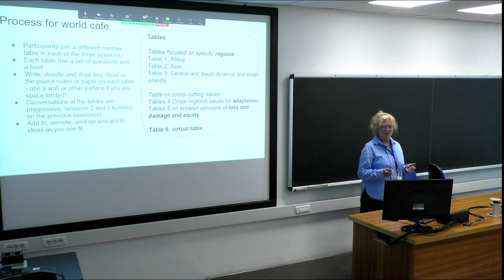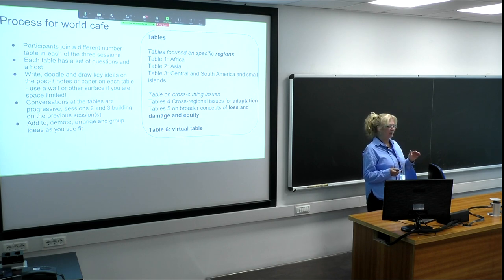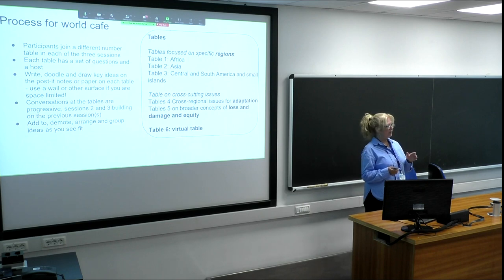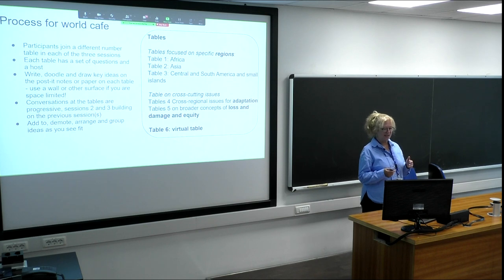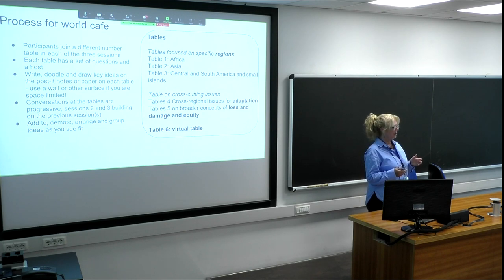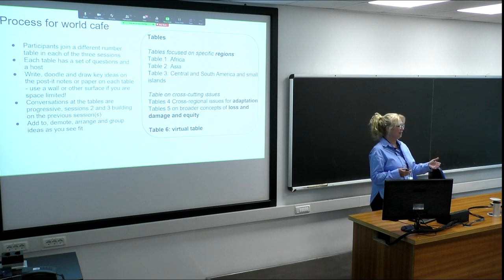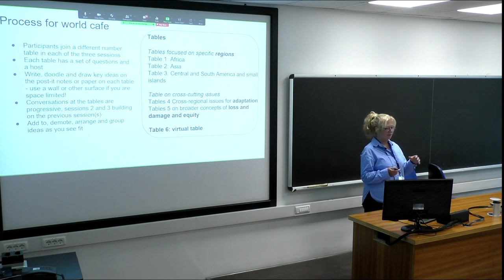We have five tables: three focused on specific regions — Africa, Asia, and Central and South America and Small Islands — and then two cross-cutting tables, one on adaptation and one around broader concepts including loss and damage. Each table will have a set of questions and we want you to visit three tables throughout the afternoon — you can visit three regional tables or go to two regional and one cross-cutting. Each table will also have a host to assist the process, and as a new group comes in, the host will do a handover and explain the thoughts of the previous group.